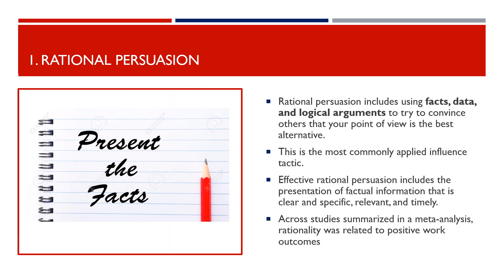Rational persuasion includes using facts, data, and logical arguments to try to convince others that your point of view is the best alternative. This is the most commonly applied influence tactic. Effective rational persuasion includes the presentation of factual information that is clear and specific, relevant, and timely. Across studies summarized in a meta-analysis, rationality was related to positive work outcomes.